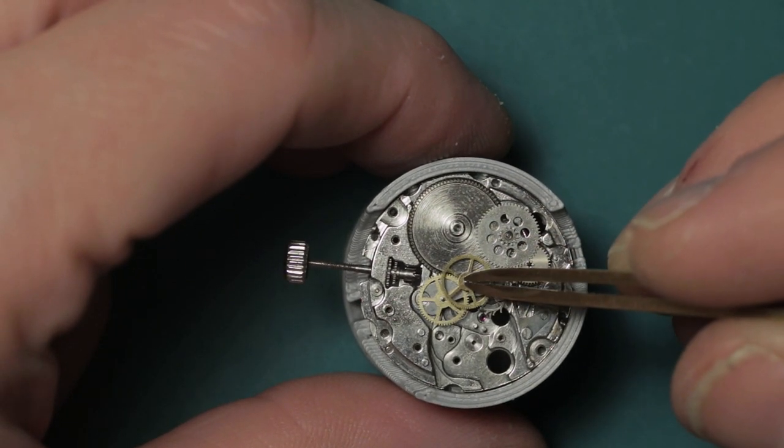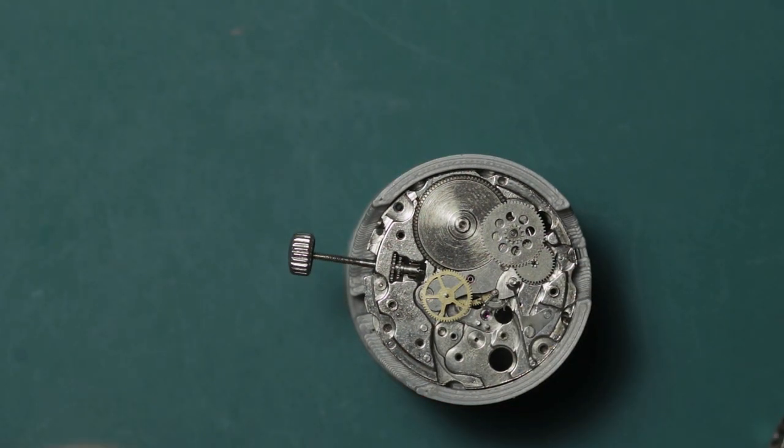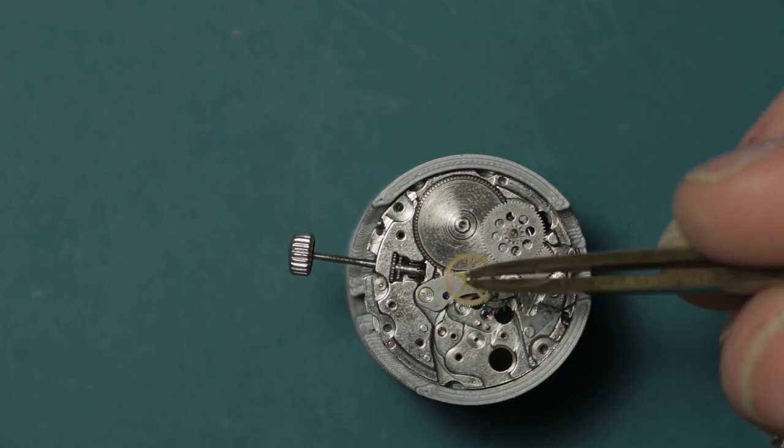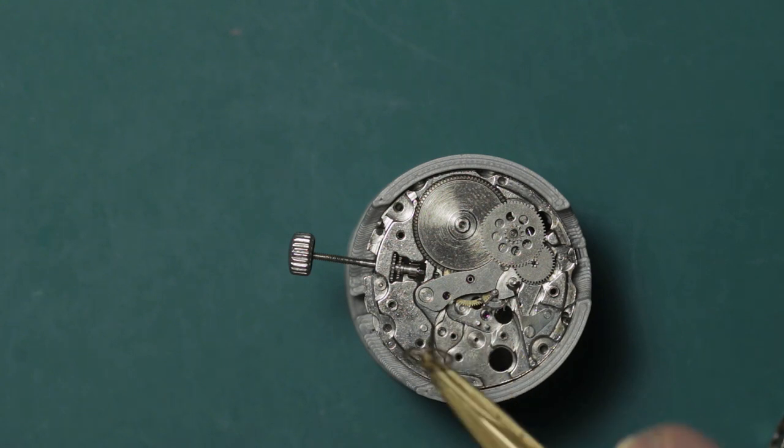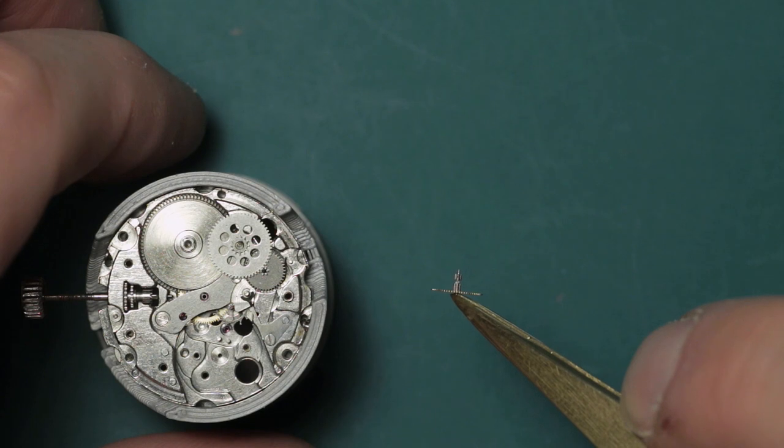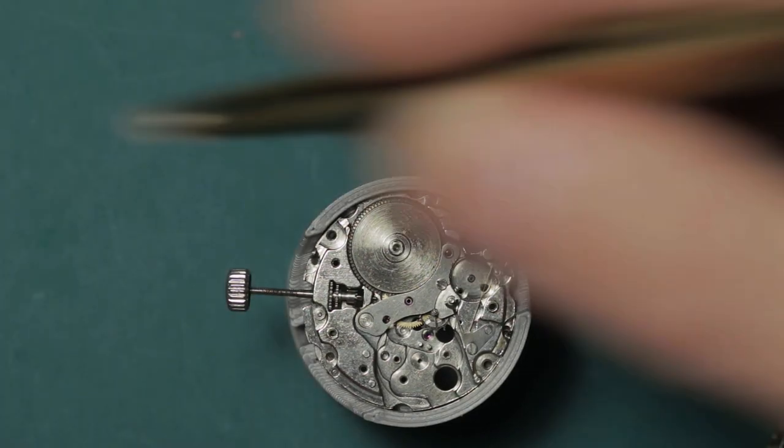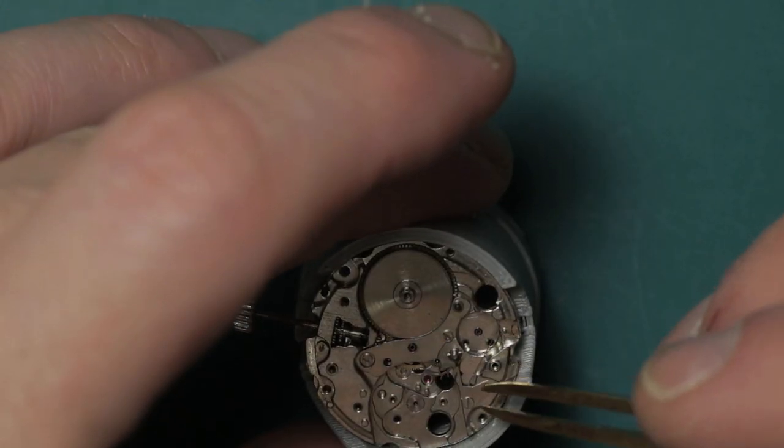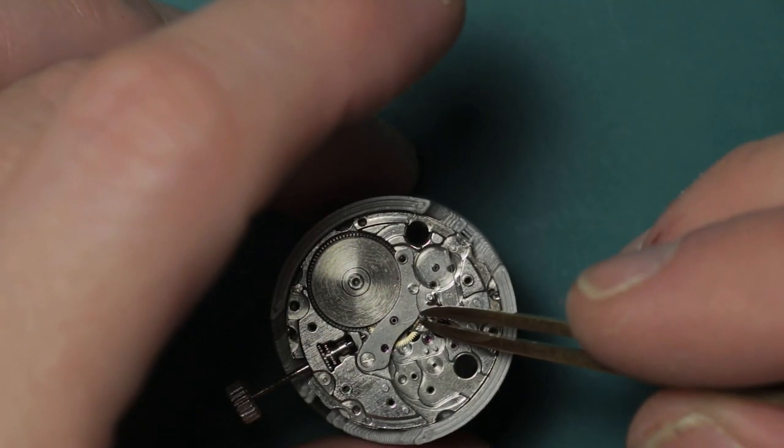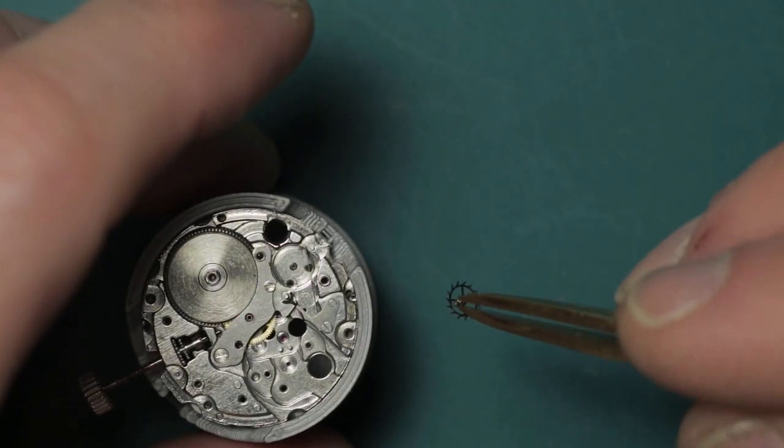Exposing the mainspring barrel, the train of wheels, and the further reduction wheels for the automatic winding system. So we remove the fourth wheel, the third wheel, the automatic winding wheels, the escape wheel which is hidden under the second wheel bridge and is waggled out, and the mainspring barrel.